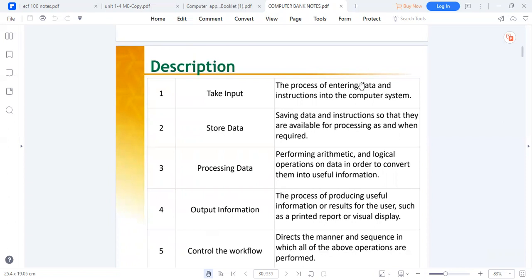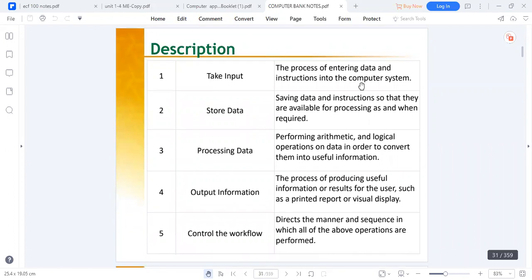Computers also have an output functionality of processing information into what the user can print out or see on the screen. Lastly, computers have a functionality of control which directs the workload in a sequential manner.